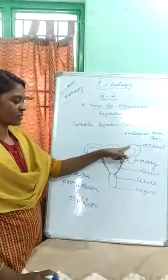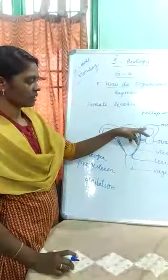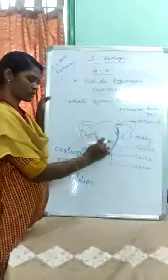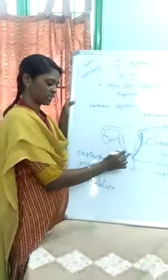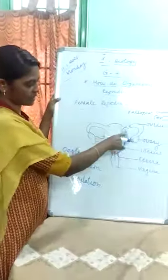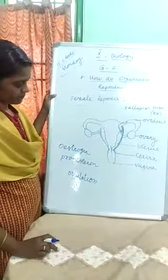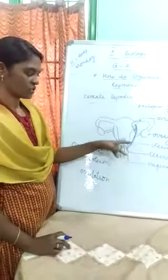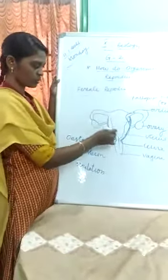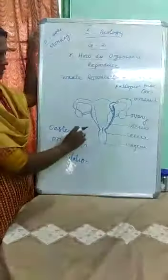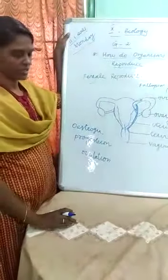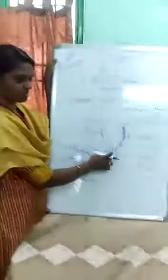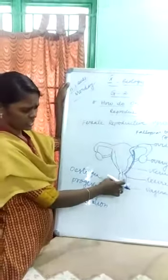Suppose fertilization does not take place and there is no entry of sperm. The unfertilized egg bursts and the endometrium peels away, coming outside as blood. The mucous membrane along with blood comes outside as a semi-fluid structure, passing through the cervix and vagina. This is called menstruation. The mouth of the uterus is called the cervix. After the cervix is the vagina, which is the external genital organ of the female.